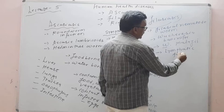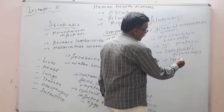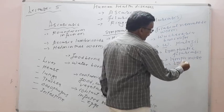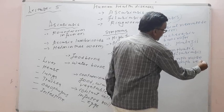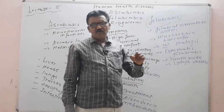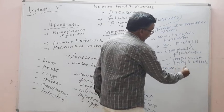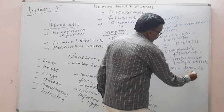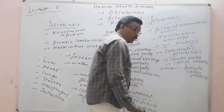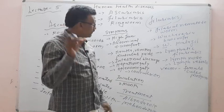The infection in filariasis takes place in the lymphatic tissue, including lymph nodes and lymphatic vessels. It is a vector-borne disorder.